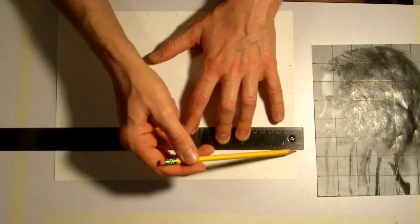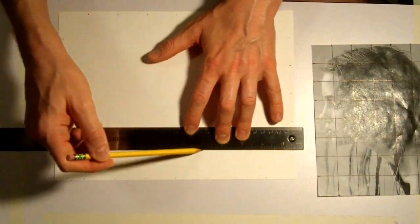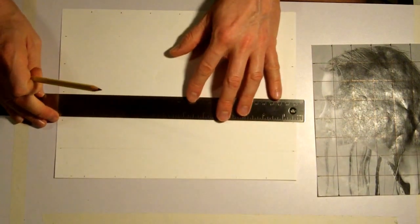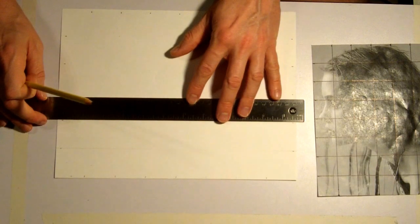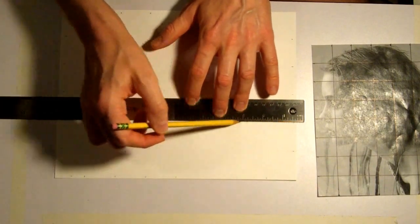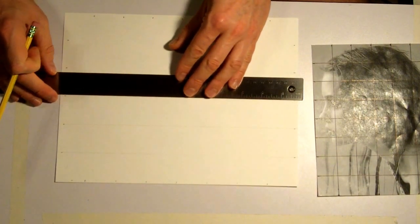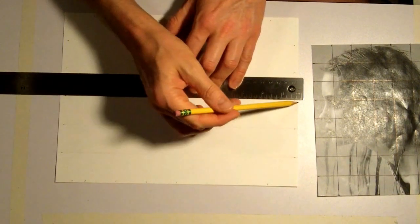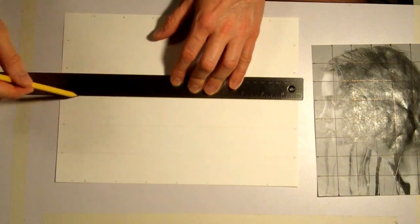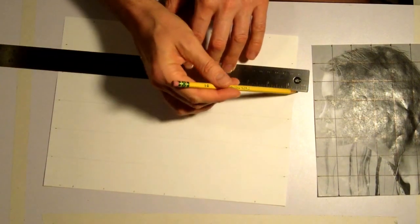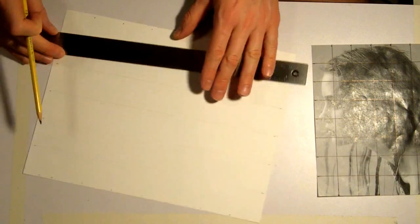One thing you want to keep in mind when you draw the grid lines on the drawing paper, you want to use an incredibly light amount of pressure because after we draw the image, we're going to have to erase these grid lines. Otherwise, you're going to have grid lines running all throughout your drawing and that's going to look cheap and like garbage. So very light lines.